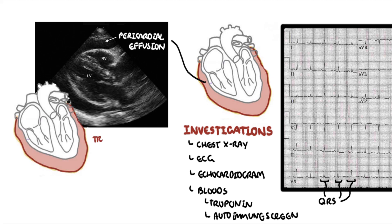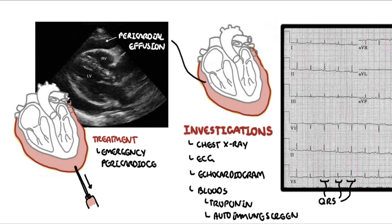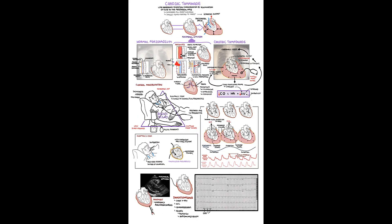Cardiac tamponade is a life-threatening condition. Management is emergency drainage via pericardiocentesis, where a needle is inserted into the pericardial space and the fluid is drained out. After this treatment, the underlying cause of the effusion is then investigated and managed.